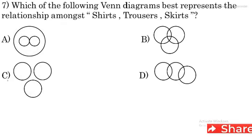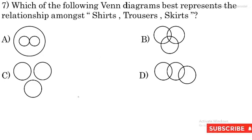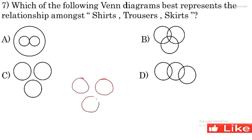Question 7: Which Venn diagram best represents the relationship among shirts, trousers and skirts? Yeh sabhi cloth material hai — shirts, trousers, skirts — but they don't have any relationship with each other. In mein aapas mein koi bhi relationship nahi hai. Shirt is a different cloth, trouser is a different cloth and skirt is a different cloth. So C option is the right option for this question.